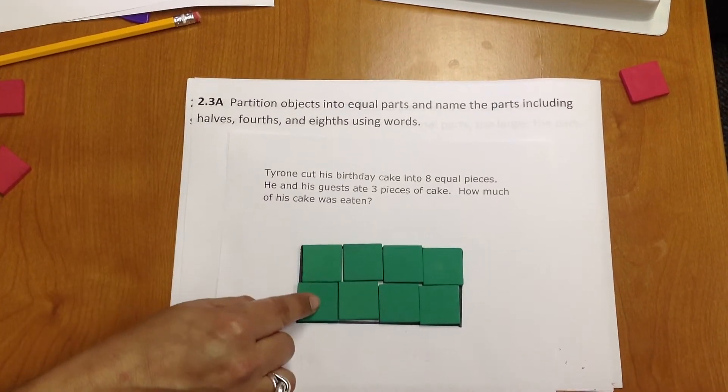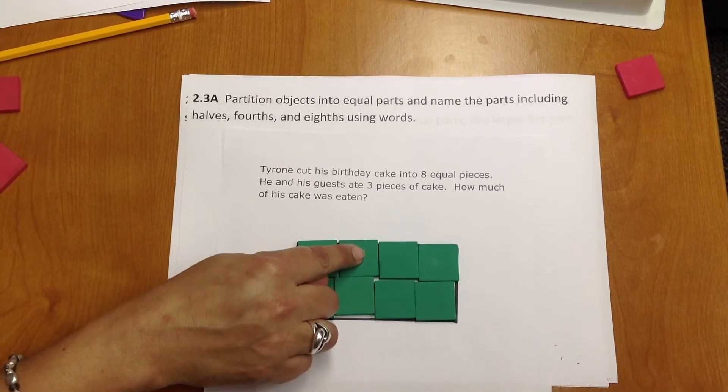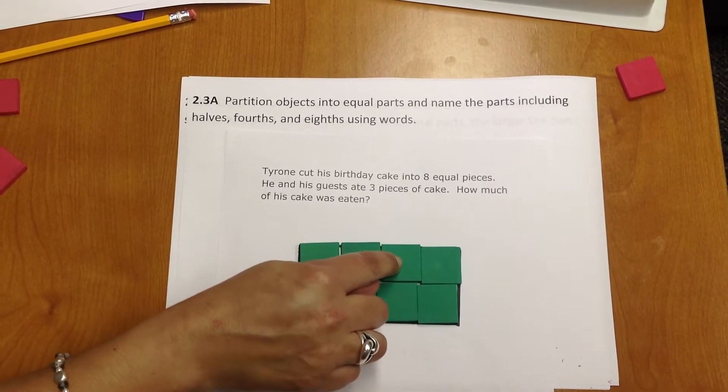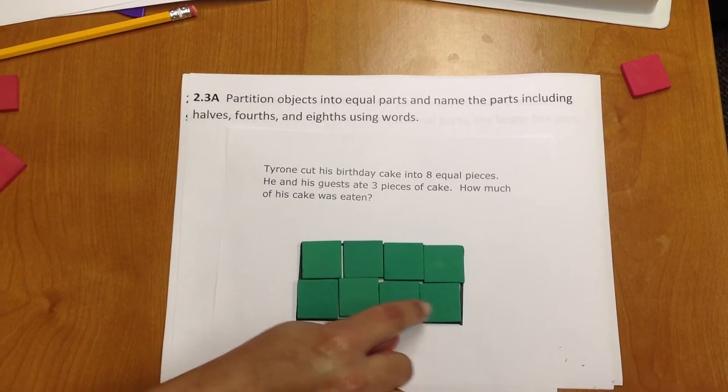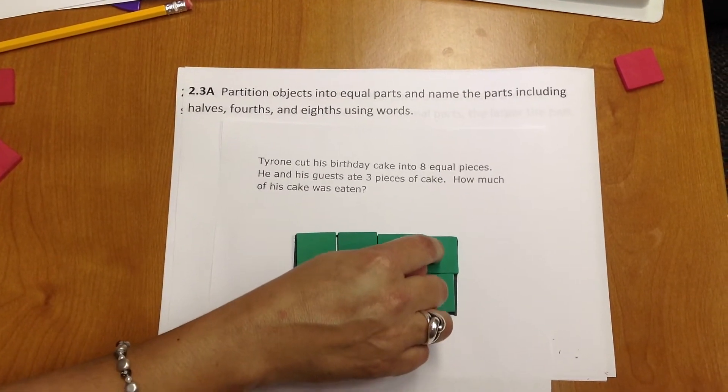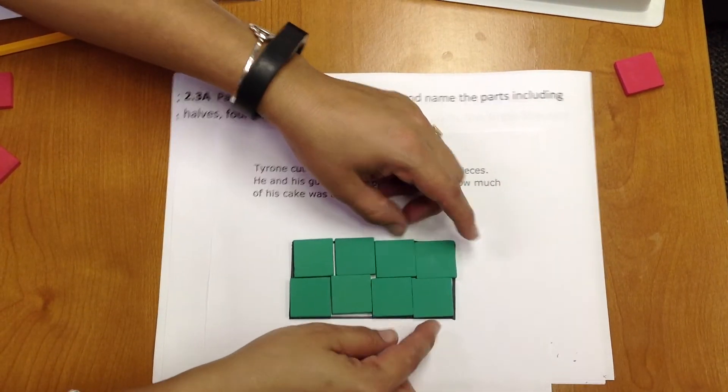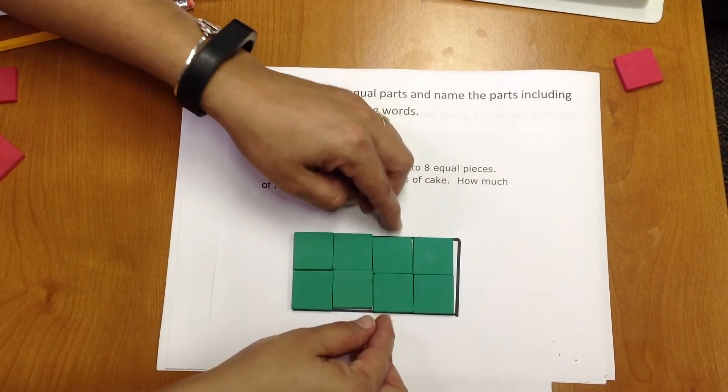One-eighth, two-eighths, three-eighths, four-eighths, five-eighths, six-eighths, seven-eighths, eight-eighths. We have cut into eight equal pieces, and each piece is one-eighth.